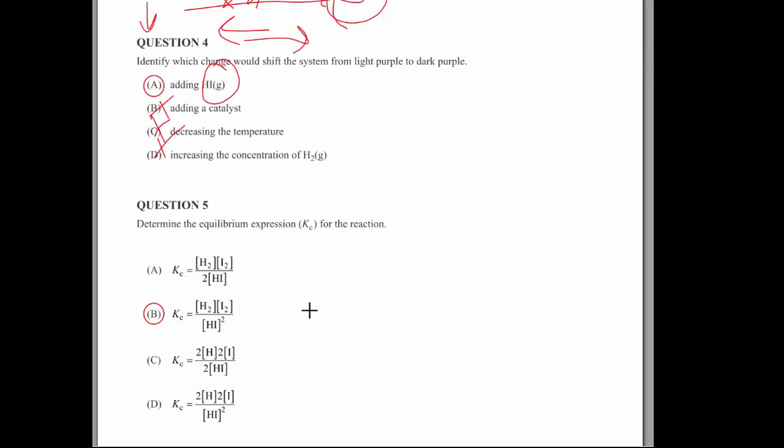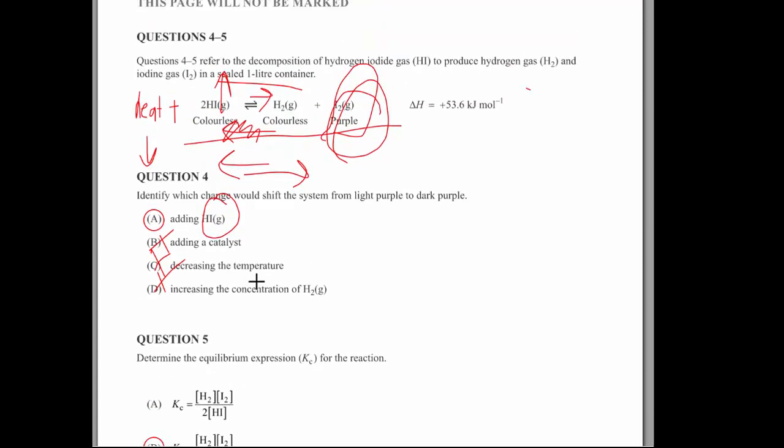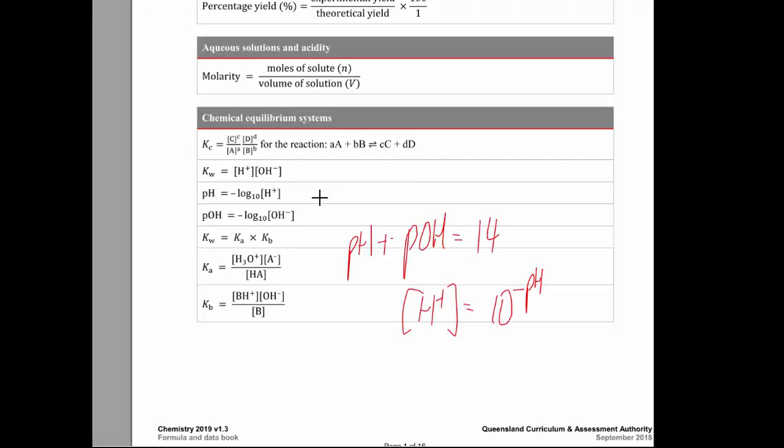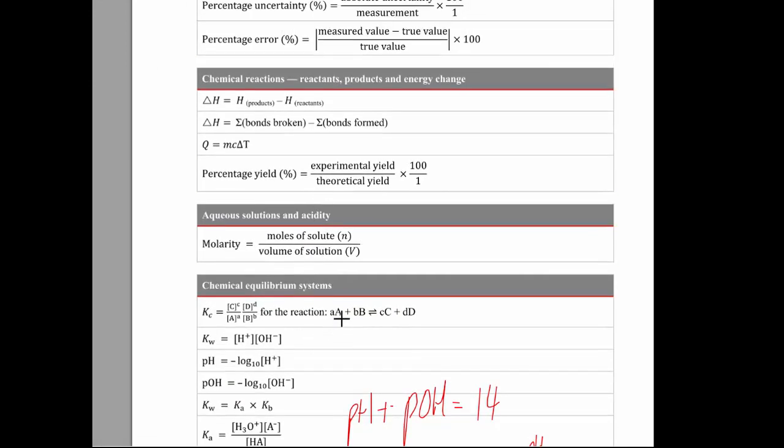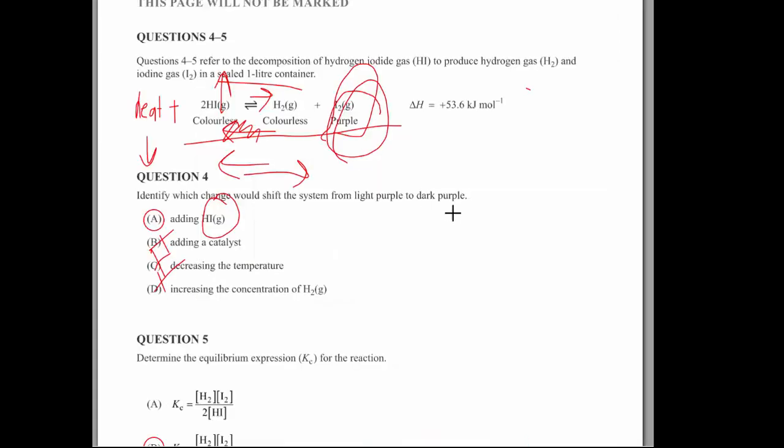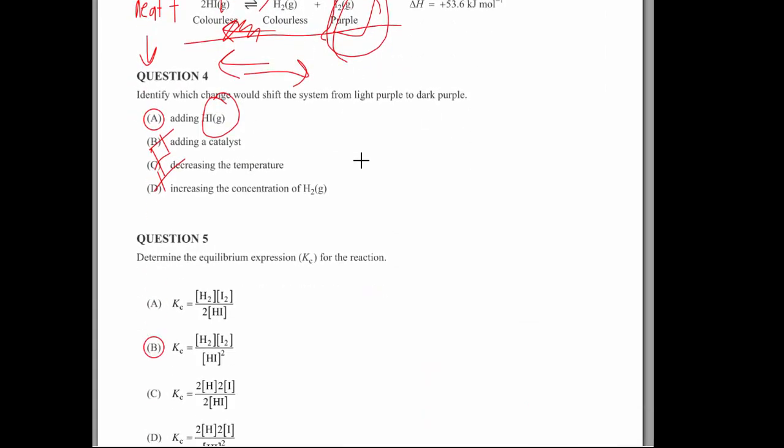Question five. If, for the reaction, that must be above. So if you've forgotten what's what, just go to your data booklet. It's quite generous. It even tells you the AB goes underneath, the CD goes on top. And so you can see that the H2 and I2 are on top.